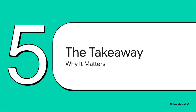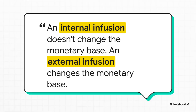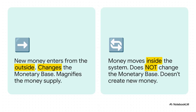What's the big lesson here? The fundamental principle is that it all comes down to one simple thing: where the money comes from. An internal infusion doesn't change the monetary base. An external infusion changes the monetary base. That distinction is everything — it's the absolute key to understanding how money is really created. What we just saw was an external infusion: new money created from the outside, injected into the system, growing the monetary base and kicking off the whole multiplier chain reaction. An internal infusion is totally different — that's just money moving around that already exists. Like if you take 100 bucks out of your wallet and deposit it in your bank account, the money just moved from currency to reserves. The total monetary base didn't change one bit, so no new money gets created. Understanding that difference is basically understanding the engine of modern monetary policy.